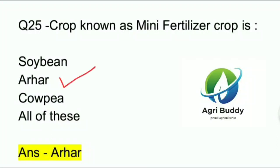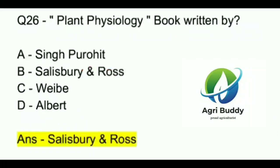Question 26. Plant Physiology is a book written by? A. Singh Purohit. B. Salisbury and Ross. C. Weeb. D. Elbert. And the answer is Salisbury and Ross.